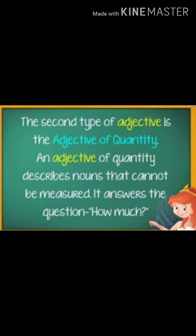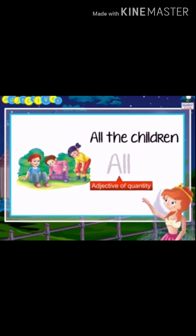The second kind of adjectives are the adjective of quantity. They are usually used with uncountable nouns. These adjectives describe nouns that cannot be measured. All and many are examples of adjectives of quantity.